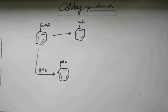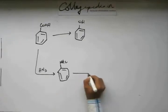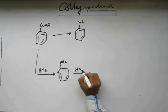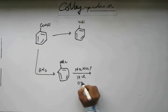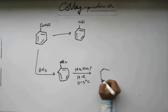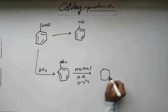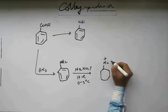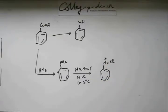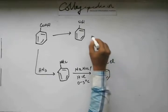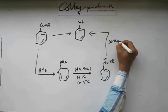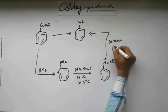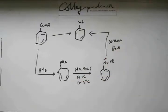From aniline you have to prepare diazonium salt: add the reagent that does it, keep the temperature low, and you get diazonium salt. Now from diazonium salt, how would you get phenol? Just add warm H₂O — that will give you phenol.